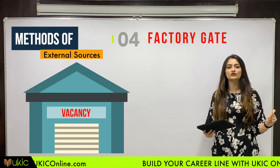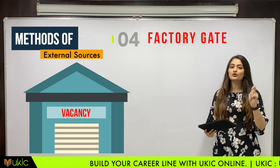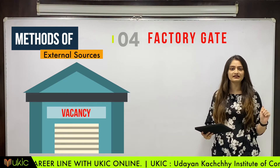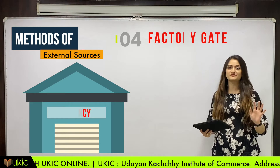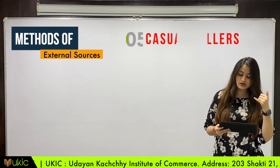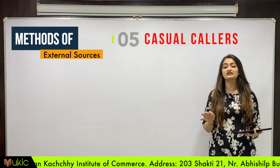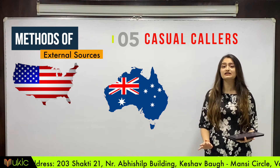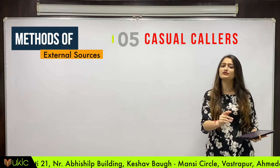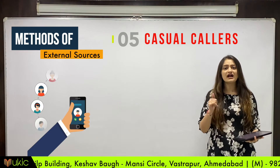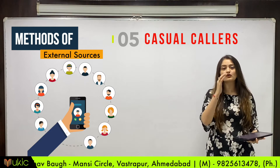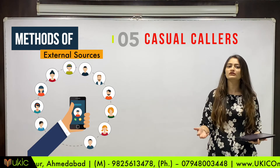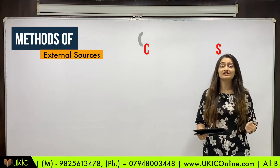The fourth method involves casual callers and labor contractors. This means workers are needed on a daily basis and payment is made per day. For unskilled or unqualified workers, this is the most common method, especially in countries like India. These are called casual callers, which relates to labor contractors.